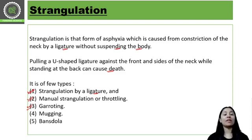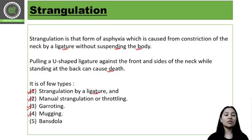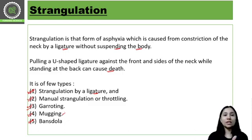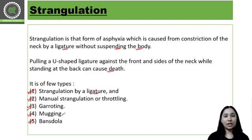We also have mugging, which is similar to throttling or manual strangulation but occurs in public places with multiple people involved. Then we have bansdola, in which two sticks are used — it is a two-stick structure and the victim's neck is pressed in between the two sticks.